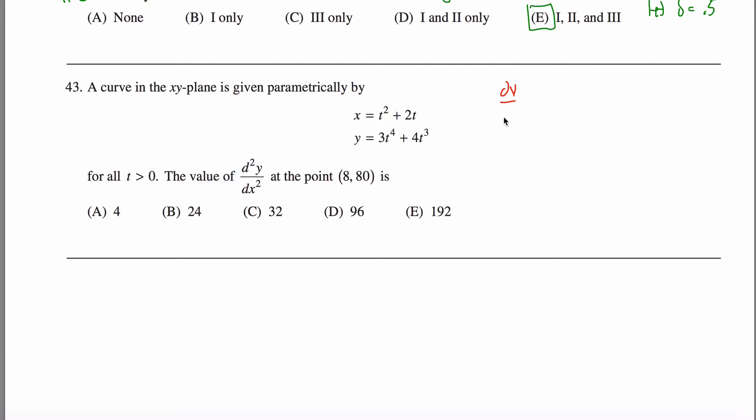So the way to derive this formula is to first think about what is dy over dx. You can kind of treat these like they're fractions. You can rewrite this as dy over dt divided by dx over dt. The reason you might think to do that is because your curve is given parametrically and your variables here are t's. We can't directly figure out dy over dx, but we could figure out dy over dt and dx over dt, the derivative of y with respect to t and the derivative of x with respect to t.